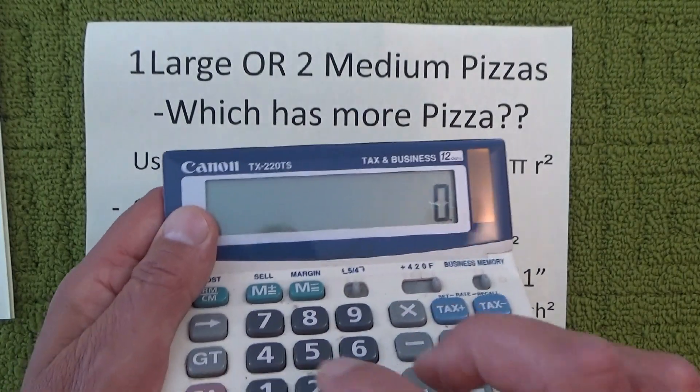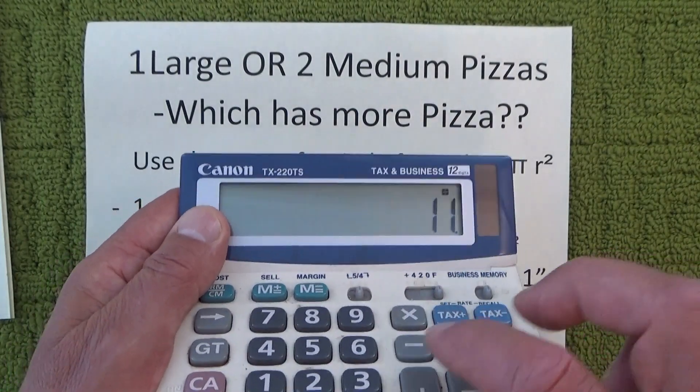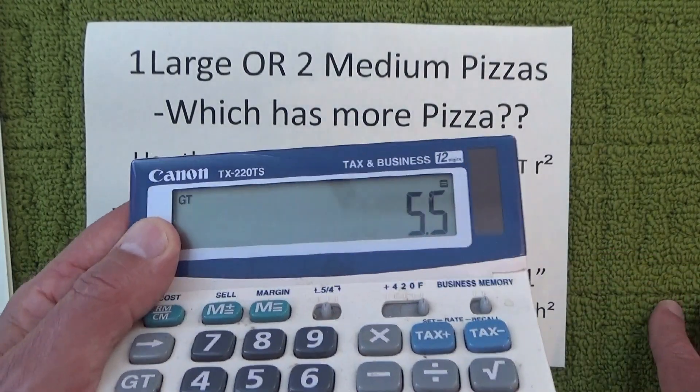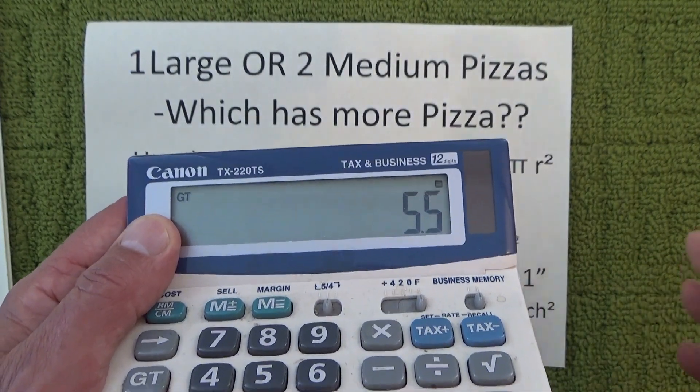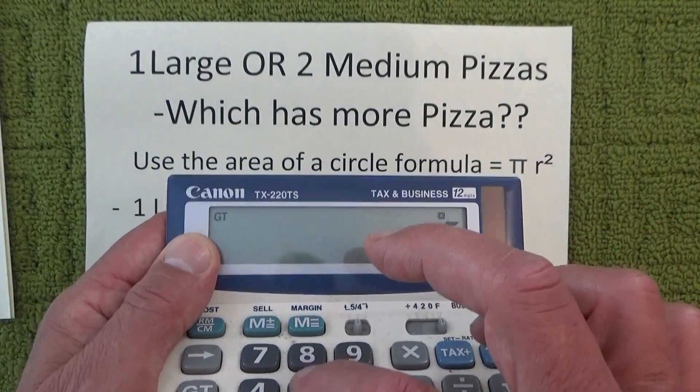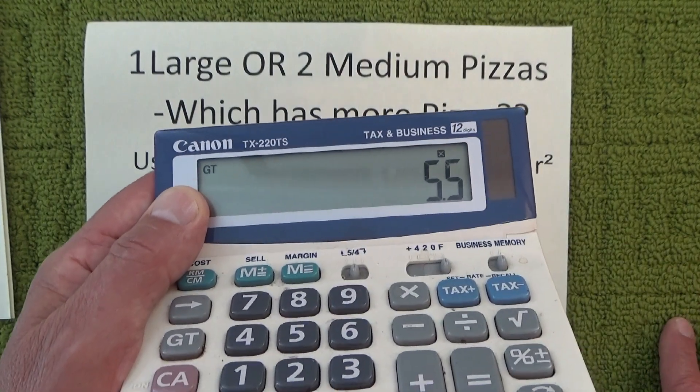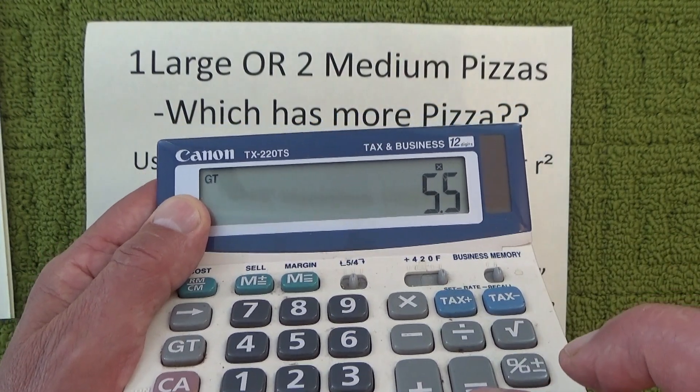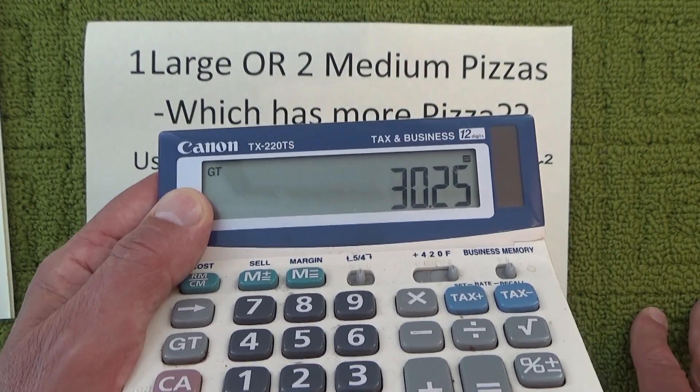So we've got a diameter of 11, so we divide that by 2 and that gives us a radius of 5.5 inches. To find the square of 5.5, we multiply 5.5 by 5.5 and that gives us 30.25, which is the radius squared of one medium pizza.